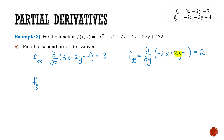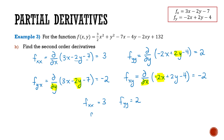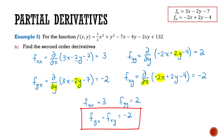For fyx, we take the derivative with respect to y of fx = 3x − 2y − 7. Looking only at y terms, the derivative is −2. For fxy, we take the derivative with respect to x of fy = −2x + 2y − 4. Looking only at the x term, the derivative is also −2. So fxx = 3, fyy = 2, and interestingly fyx = fxy = −2.